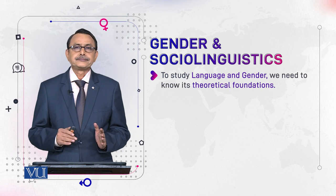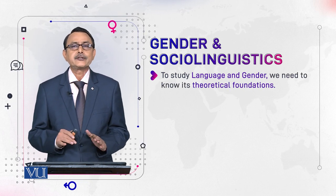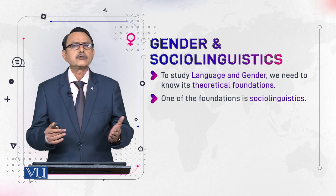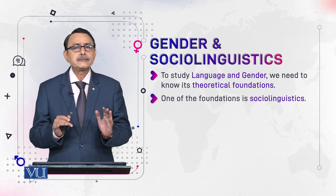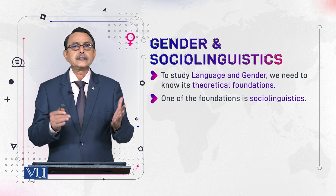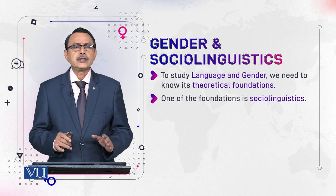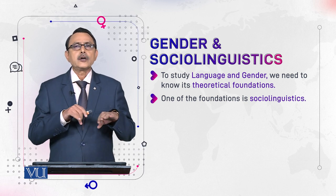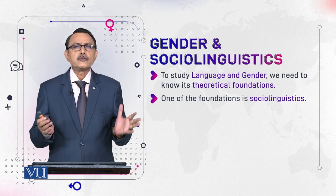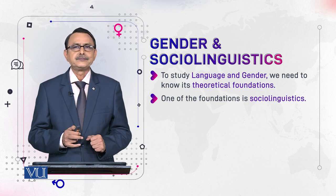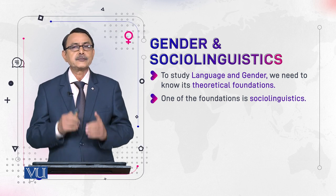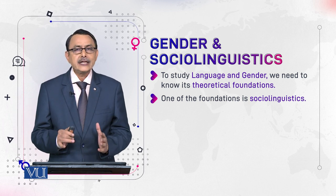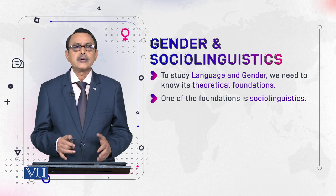To study language and gender we should know about its theoretical foundations. One of the foundations is sociolinguistics. Every subject that you study has its theoretical foundation, whether it is psychology or sociology — different concepts, different theories provide support to that discipline. So what are the theoretical supports of this discipline? One major theoretical support comes from sociolinguistics.